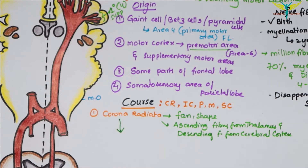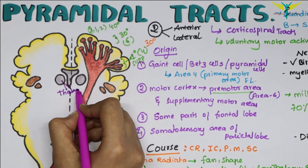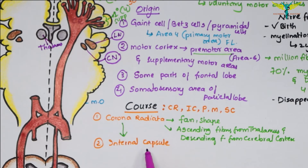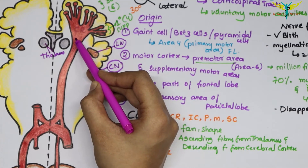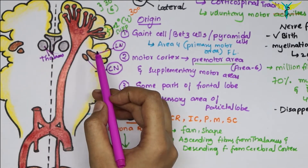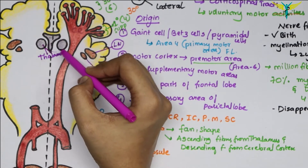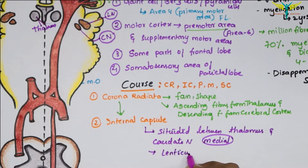After the corona radiata, the fibers pass on to the internal capsule. The corona radiata contains ascending fibers from the thalamus and descending fibers from the cerebral cortex. In the internal capsule, as these fibers pass downwards towards the brain stem, the corona radiata converges into the internal capsule, which is situated between the thalamus and the caudate nucleus on the medial side and the lenticular nucleus on the lateral side.